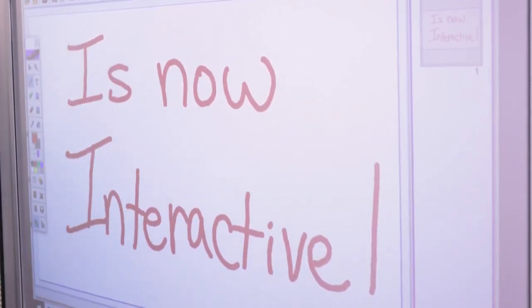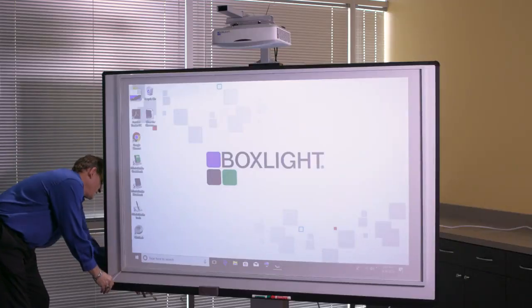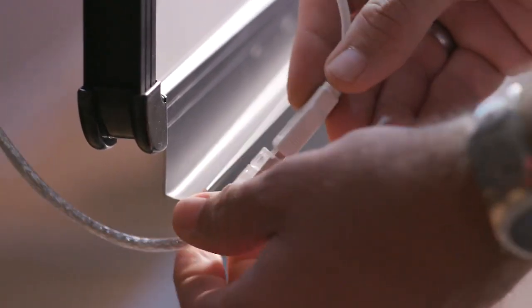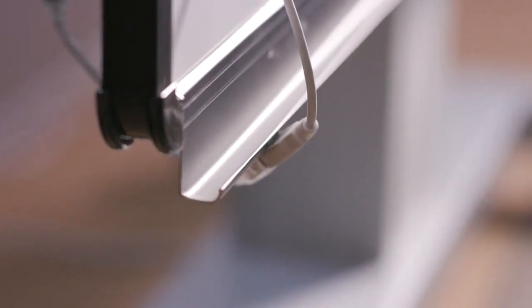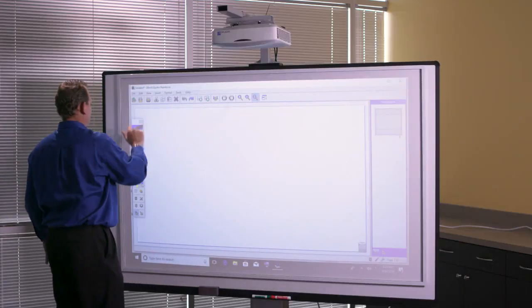Installation is simple. First, load the MimeoStudio software onto the teacher computer. Now connect MimeoFrame to the teacher computer using the supplied cable and launch MimeoStudio. A quick calibration process is all it takes, and you're up and running.